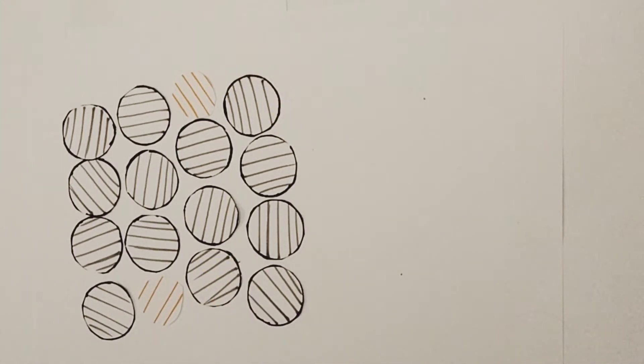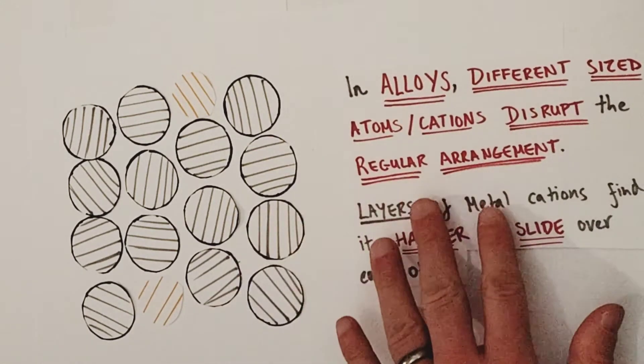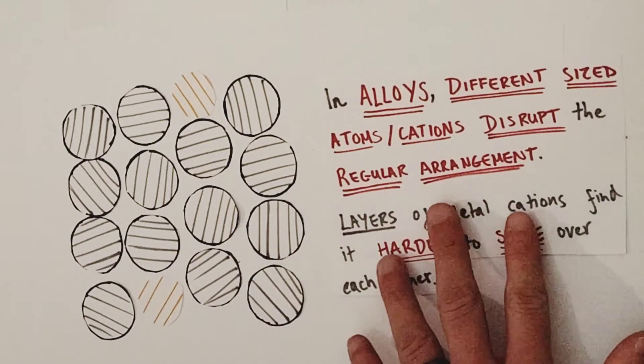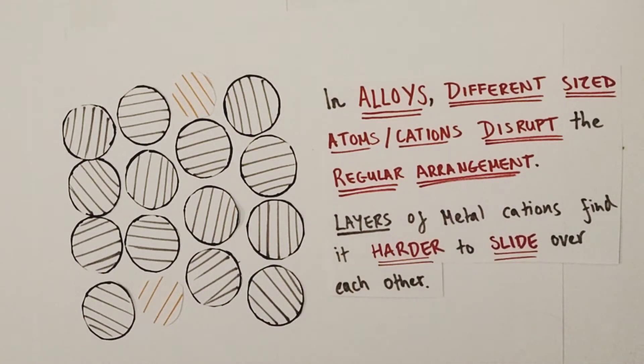Usually the metal ions involved are of a similar size to those of the pure metal but slightly different in size, and so again the key factor is that with these alloys as well, the cations that have been introduced have a different size to the pure metal cations.